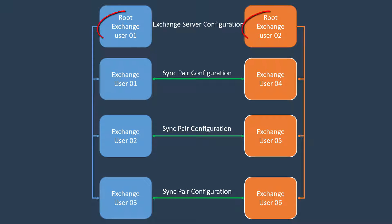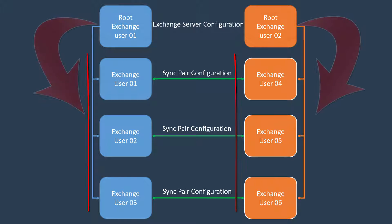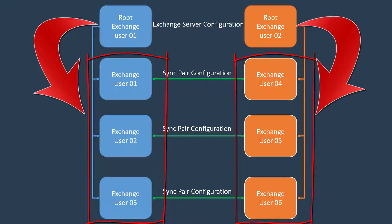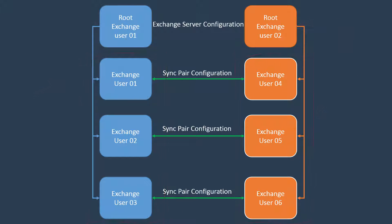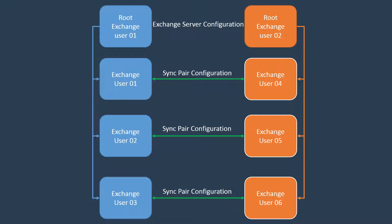We create a root user on each Exchange Server. On each Exchange Server, we give owner permission to the root user for all Exchange users participating in this synchronization. We provide credentials of those two Exchange root users to our CB Exchange Server Sync service. We create a sync pair between each two users, deciding what, how, and how often to synchronize between them.